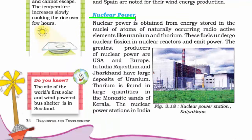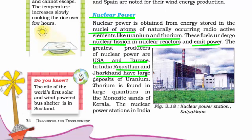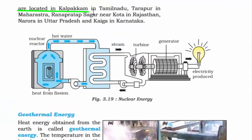Nuclear power is extracted from the nuclei of atoms, especially elements like uranium and thorium, using a nuclear reactor. Nuclear fission — blasting atoms to produce power — is used. Currently USA and Europe are the largest producers. In India, Rajasthan and Jharkhand have large deposits of uranium, and thorium is found in monazite sands of Kerala. Nuclear plants in India are located at Kalpakkam in Tamil Nadu, Tarapur in Maharashtra, Rana Pratap Sagar near Kota in Rajasthan, Narora in UP, and Kaiga in Karnataka.